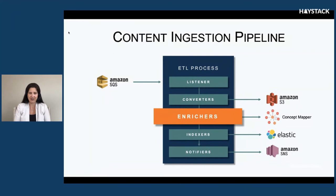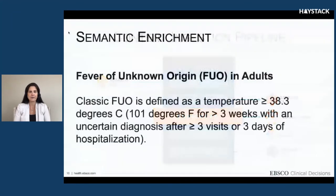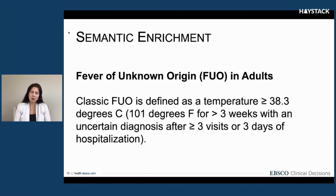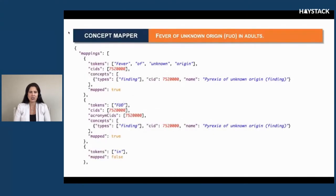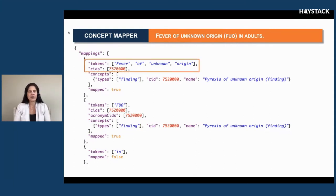I'm going to take a deeper dive into our semantic enrichment process. Here is a snippet of sample text that we're going to enrich. The bold text represents a content title — 'Fever of Unknown Origin (FUO) in Adults' — followed by a snippet of body text. We pass these chunks of text to our concept mapping endpoint, which tries to create a connection between these tokens and concepts in our graph. For example, 'Fever of Unknown Origin' is associated with concept ID 752000.